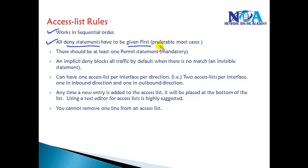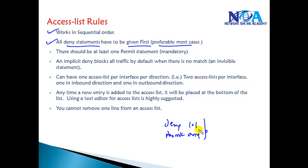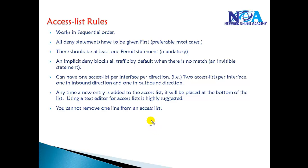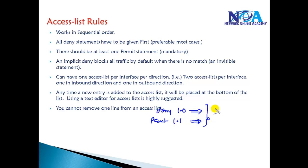Take an example: I want to deny 192.168.1.1 and permit all the remaining. In most cases we write deny at the beginning and permit at the last. But consider a requirement where you want to permit 1.1 and deny the complete 1.network. If you write deny first in that order, the second segment — the permit — is not going to work.